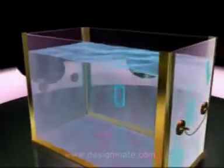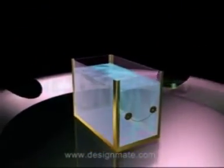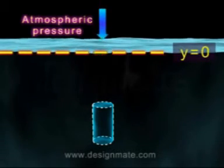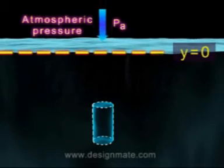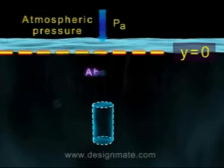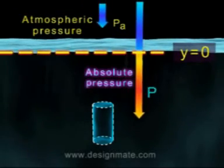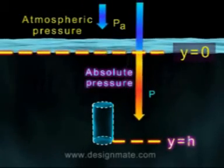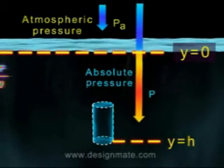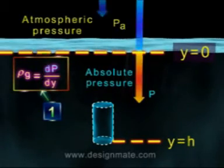Now consider an open vessel containing the fluid. Therefore, at depth y = 0, the upper surface of the liquid is subject to atmospheric pressure Pa. So, to obtain the absolute pressure P at the depth y = h, we need to integrate equation 1.